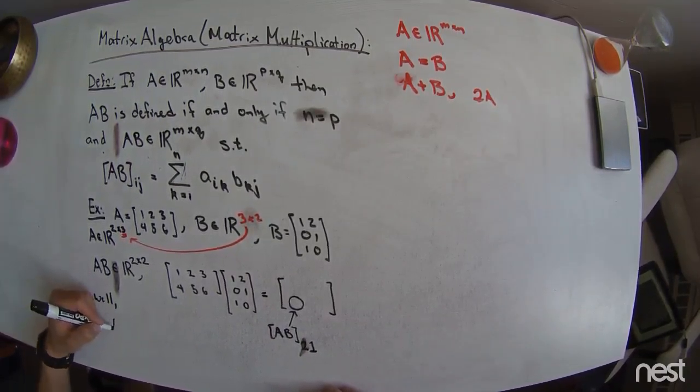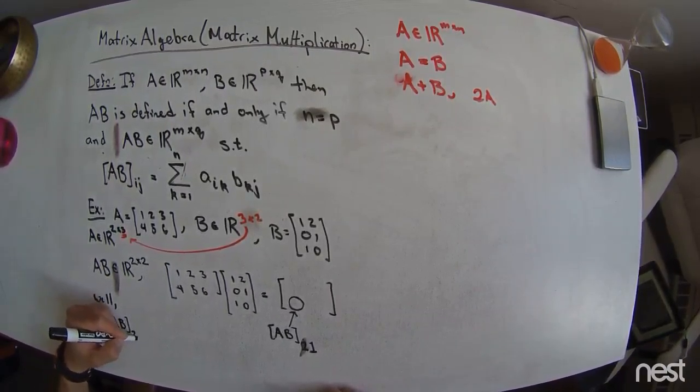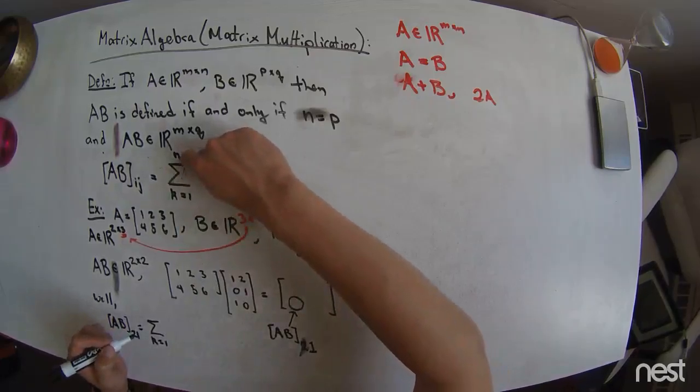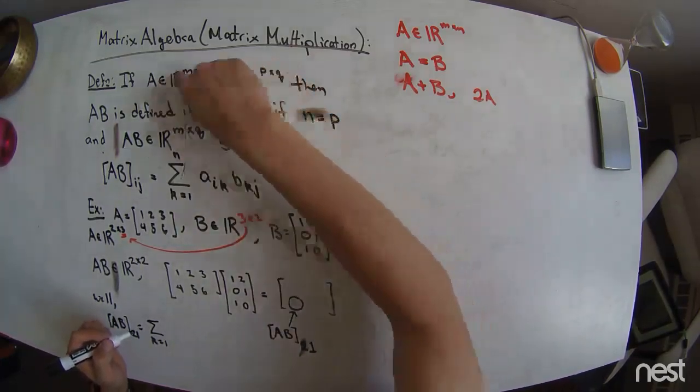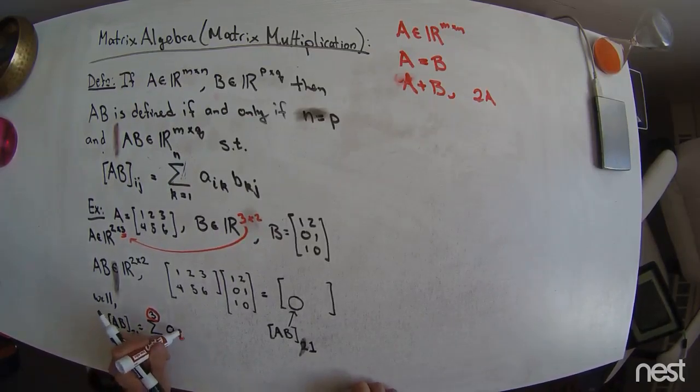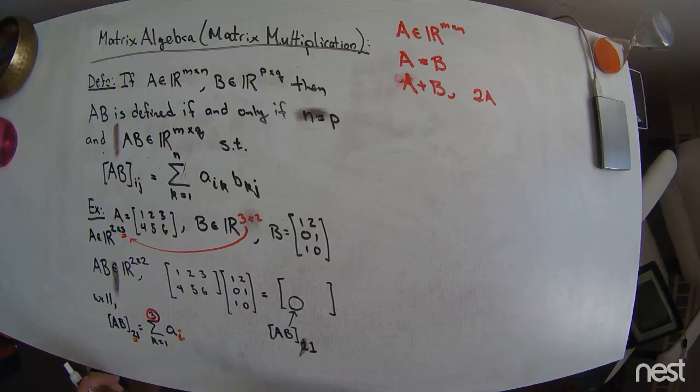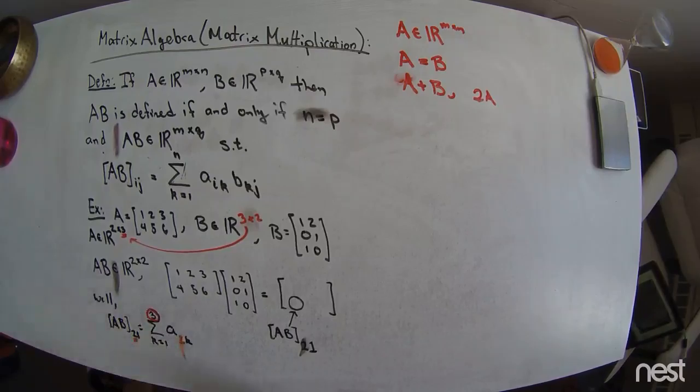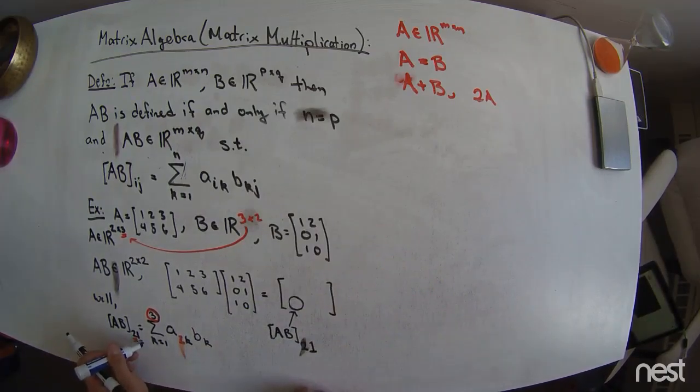Well, AB 2nd row 1st column is going to be defined by this, so I'm going to get the sum k equals 1 to n. In our case, n is the number of columns in the A matrix, where n is 3. And then I have little a, an element from the A matrix, sub i. My i in this case is 2. k is going to be a count variable, which will scope from 1 to 3. And then I have b sub k j. But what is my j? My j is 1 in this case, so 1.